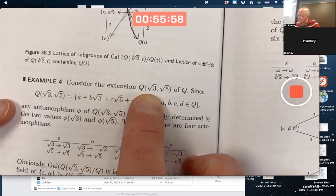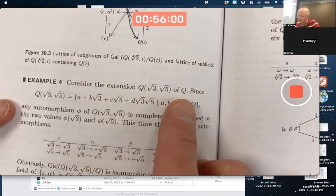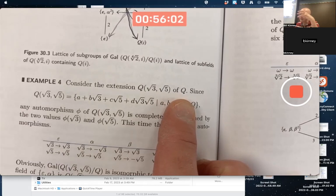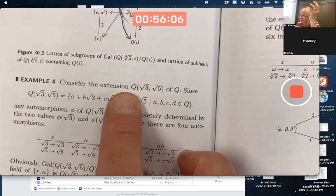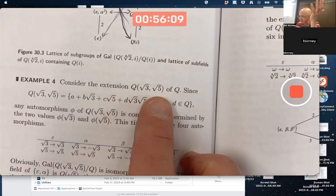Consider this extension, Q adjoined root 3 and root 5 of Q. So we've got the base field being the rationals. This is the smallest subfield of the reals containing all the rationals, also containing root 3, also containing root 5.